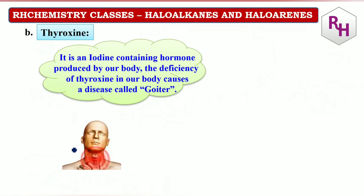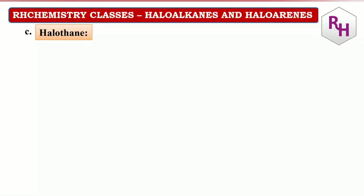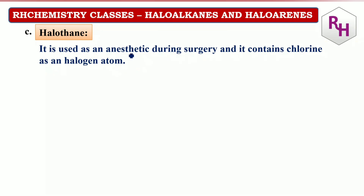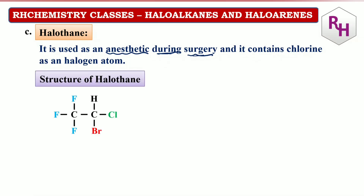Thyroxin is an iodine-containing hormone. If there is a deficiency of thyroxin, we will get the disease called goiter. Next, halothane — halothane is mainly an anesthetic used during surgery. Anesthetic means temporary unconsciousness — anasthetic is used in halothane. Halothane contains chlorine and bromine.